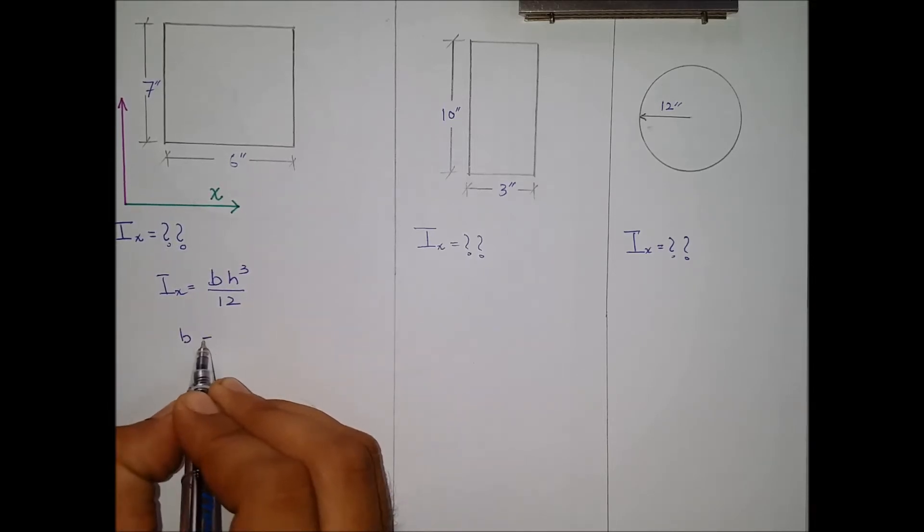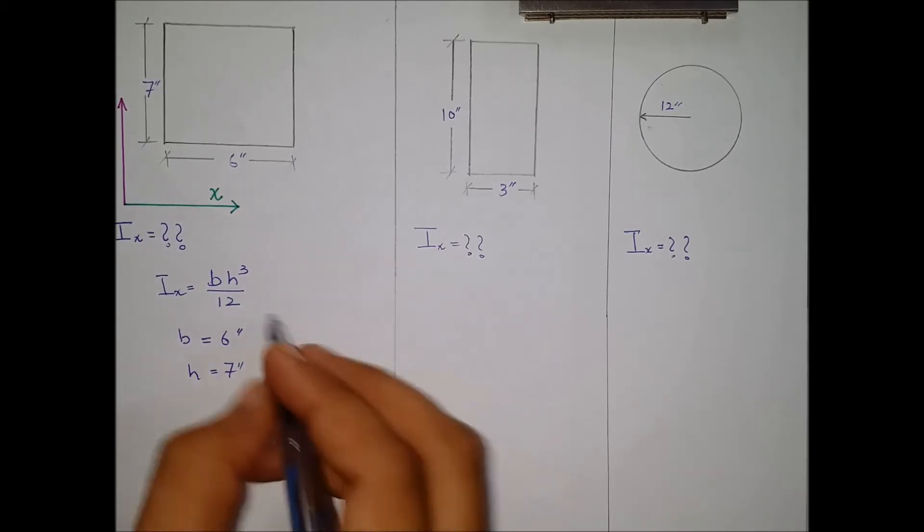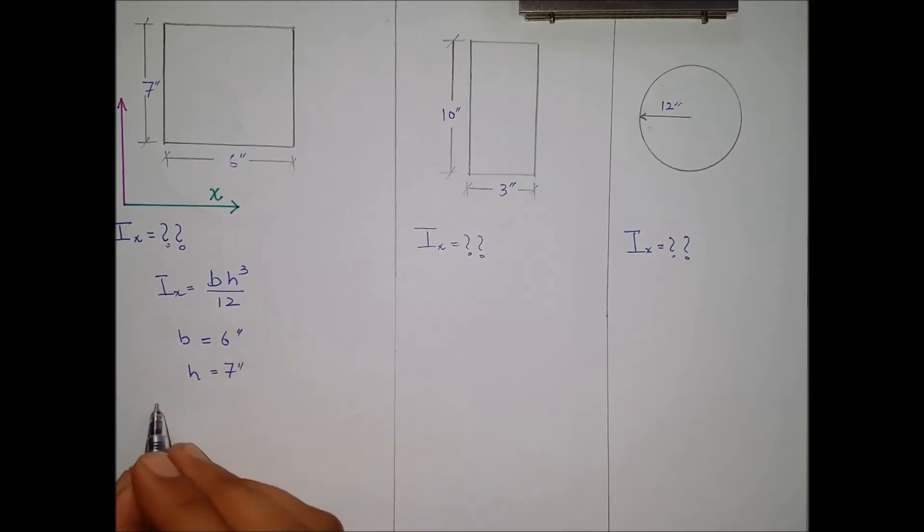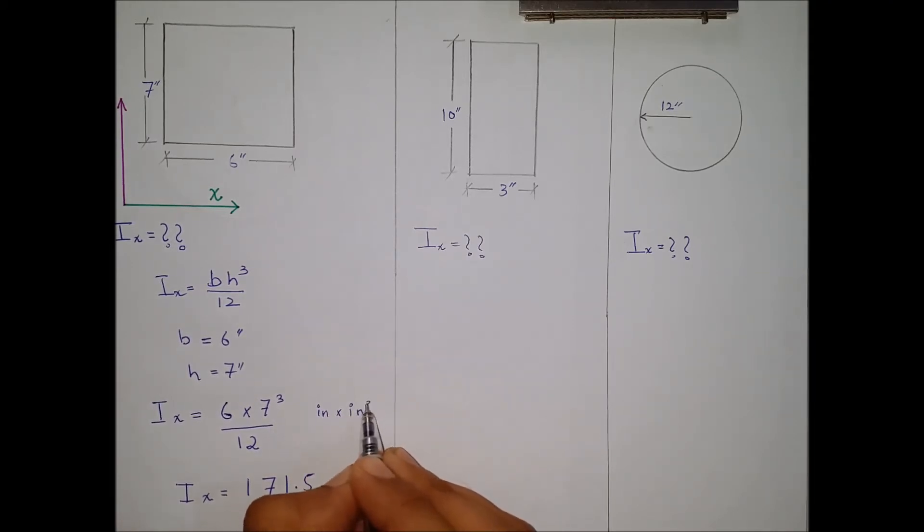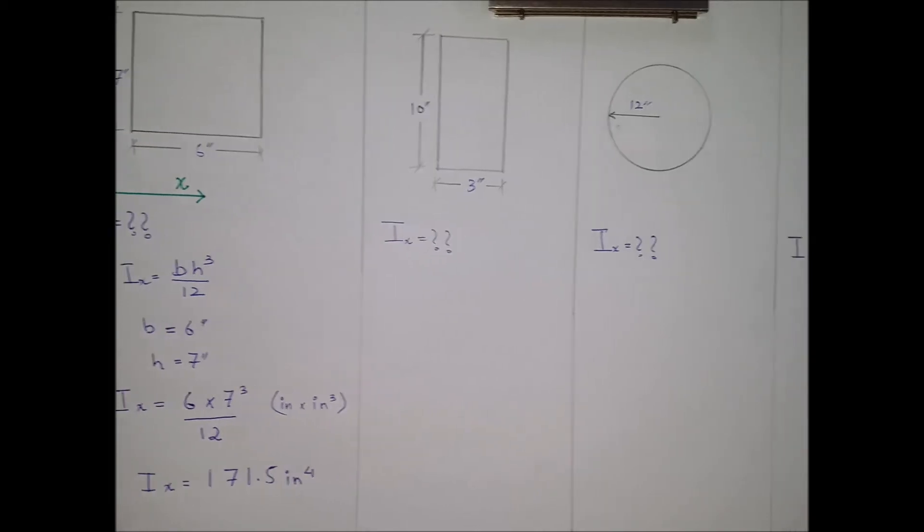So for the x-axis, the base is 6 inches and the height is 7 inches. Substituting the values in the formula, we will get 6 by 7 cubed over 12. Calculating, the moment of inertia comes out to be 171.5. The unit of moment of inertia will be inch times inch cubed, that means it would become inch to the fourth.